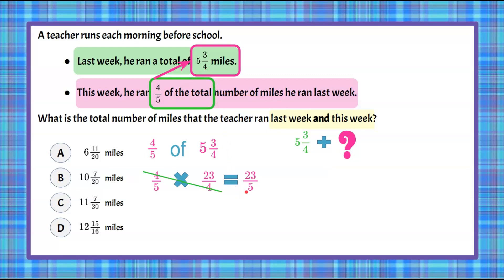We could change it to a mixed number, but I'm going to leave it as an improper fraction. So let's come back over here and rewrite 5 3/4 as an improper fraction. 4 times 5 is 20, plus 3 is 23. So 23/4 add what he did this week, which is 23/5.